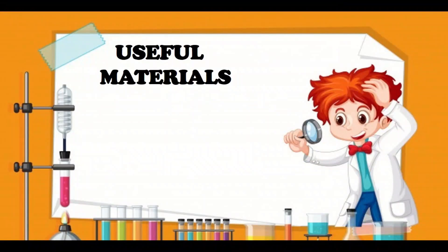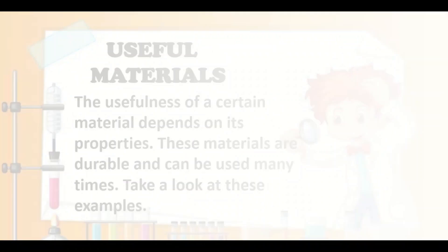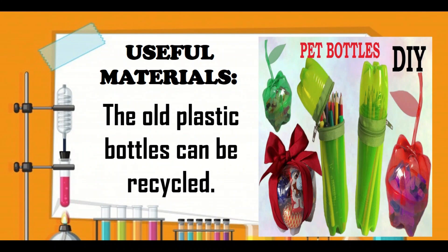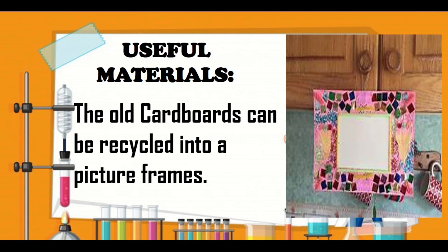How will you know if these materials are useful and harmful? Useful materials — the usefulness of a certain material depends on its properties. These materials are durable and can be used many times. Take a look at these examples. Old plastic bottles can be recycled, and old cardboards can be recycled into a picture frame.